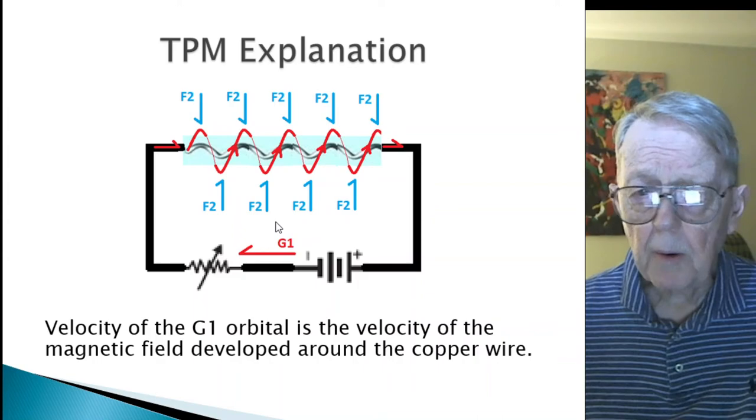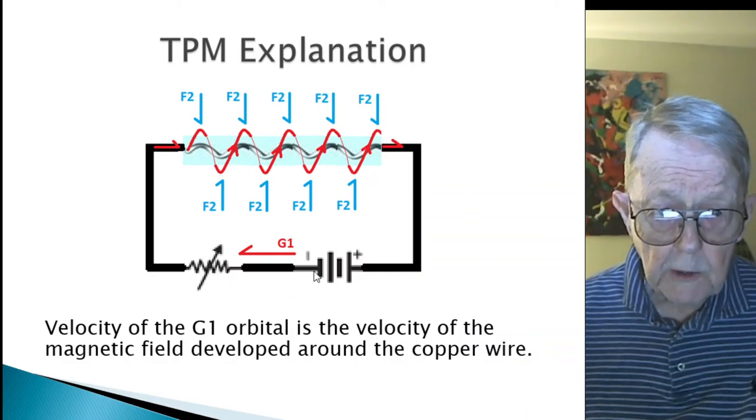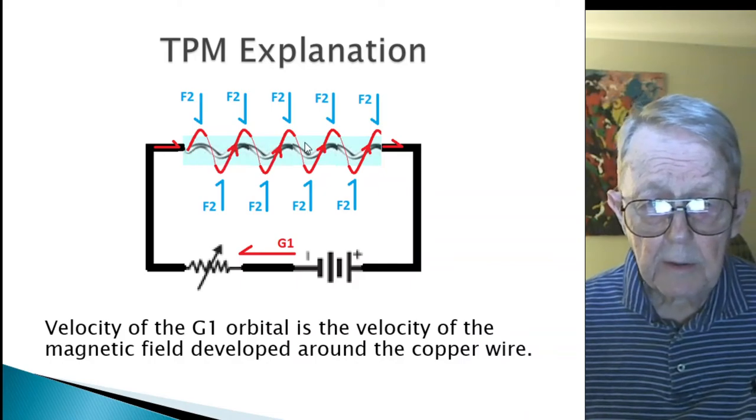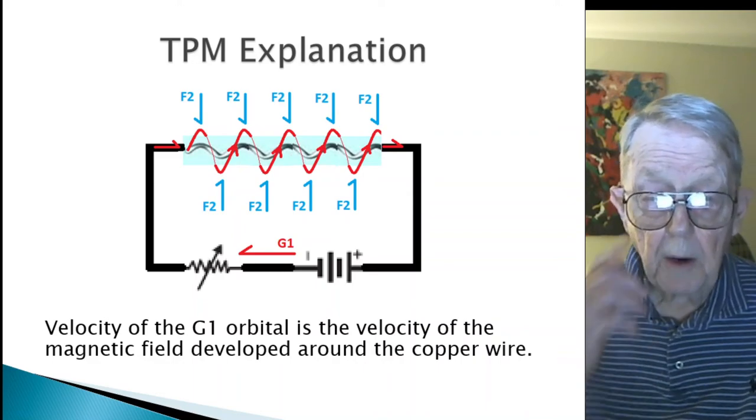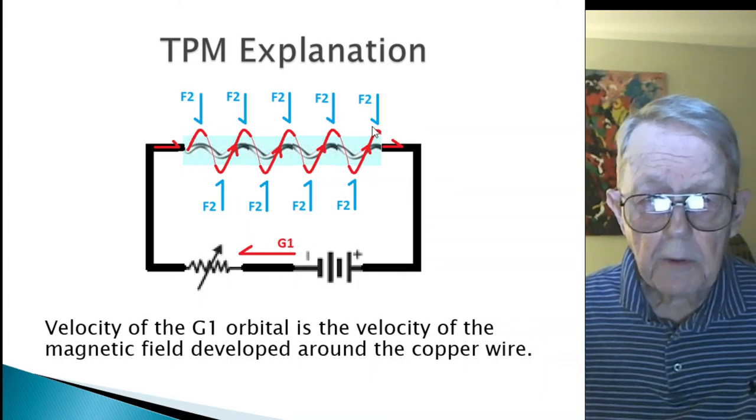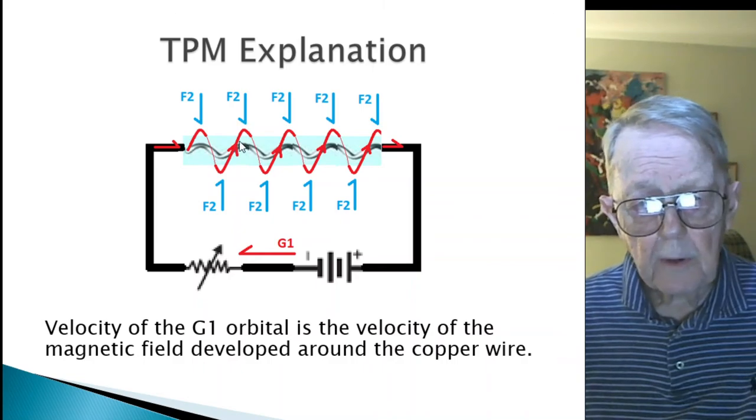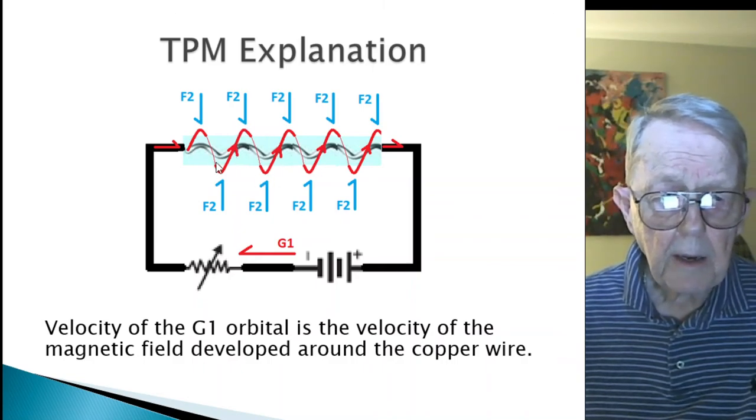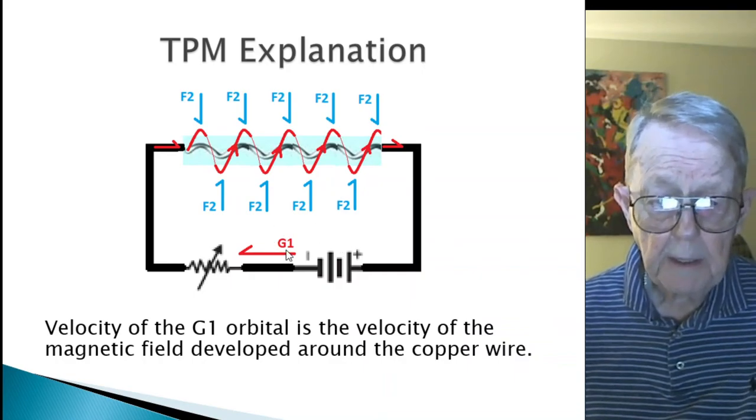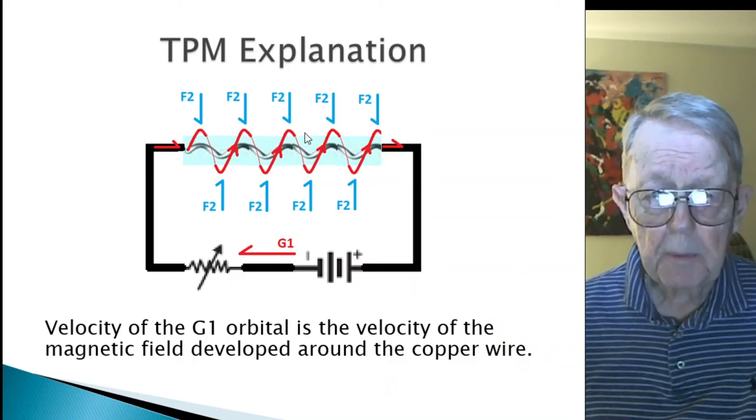Well, here's the particle model explanation for a magnetic field in the first place. This is similar to the slide I just showed. G1's coming out through a resistor and you have a copper wire here. And I maintain that the G1 particles do not flow in a straight line. They flow somewhat a spiral shape path. And the only thing available to create this magnetic field, which is the red line, it's in a spiral pattern. And so the only thing that you can get, the only thing that could make the magnetic field is the G1. And what is the speed of the G1?